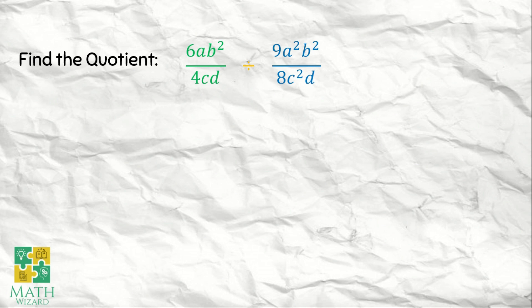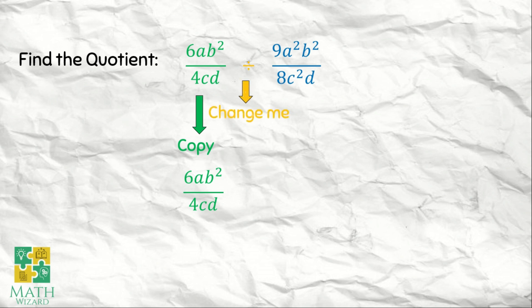So, how do we divide fractions? The first step is we need to copy the first one — that's 6ab squared over 4cd. After that, we need to change the operation. So from dividing the two algebraic expressions, we need to multiply it.